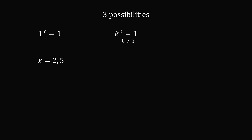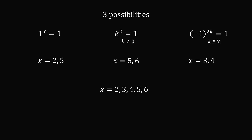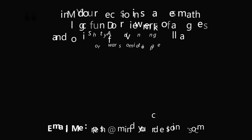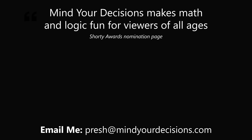To summarize, there are three possibilities. First, the base equals 1, giving x equals 2 or x equals 5. Then, the exponent equals 0 with a non-zero base, giving x equals 5 or x equals 6. Finally, negative 1 raised to an even power gives x equals 3 or x equals 4. So the entire solution set is {2, 3, 4, 5, 6}. What an amazing question. Thanks for making us one of the best communities on YouTube — see you next episode of Mind Your Decisions, where we solve the world's problems one video at a time.